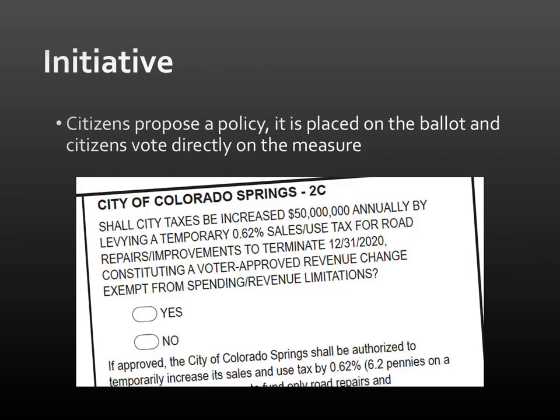We have three examples of direct democracy within the United States. All three are at city and state levels only, not the federal level. The first one is an initiative. For an initiative, citizens can actually write out and propose a policy. If they get enough signatures on a petition, they can have it placed on the ballot, and then people get to vote directly on that measure. This is direct democracy because you're voting not for a person, but actually on the policy itself.